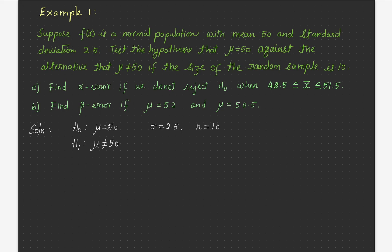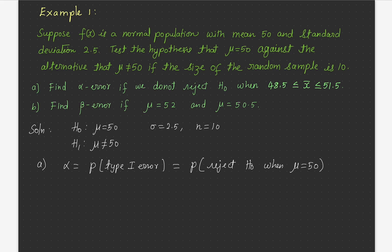Alpha is the probability of Type 1 error. Type 1 error occurs if we reject the null hypothesis when it is true. H0 is true when mu is equal to 50. We reject H0 when x-bar is less than 48.5 or x-bar is greater than 51.5, provided the mean is 50. We do not reject H0 if the sample mean lies between these two numbers.